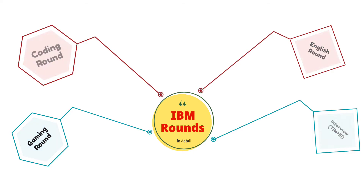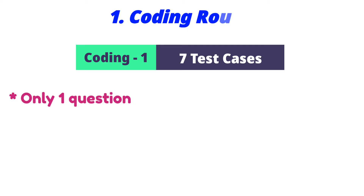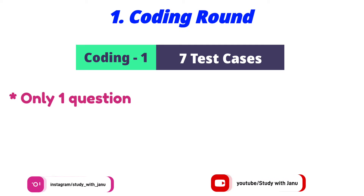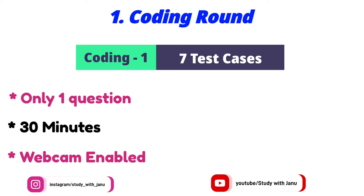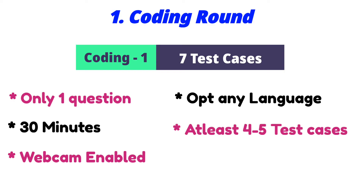Let's see in detail all these rounds. The first one is the coding round — you will be having only one question to attempt which has seven test cases. The time limit is 30 minutes, webcam enabled, and you can opt for any programming language like C, C++, Java, JavaScript, Python, etc. At least you need to be passing four to five test cases, and the results will be announced the next day.